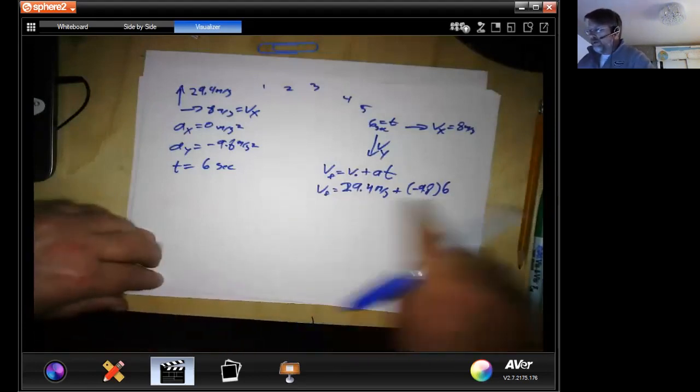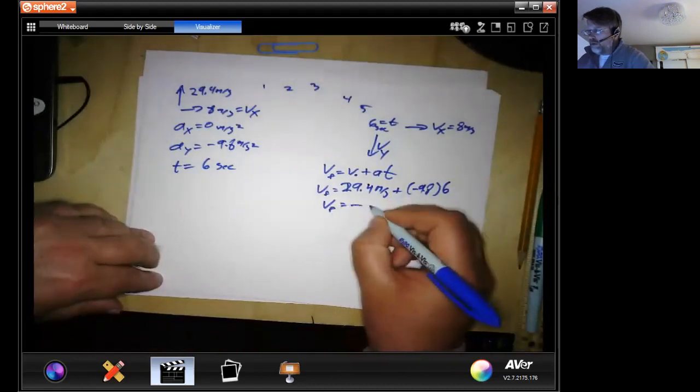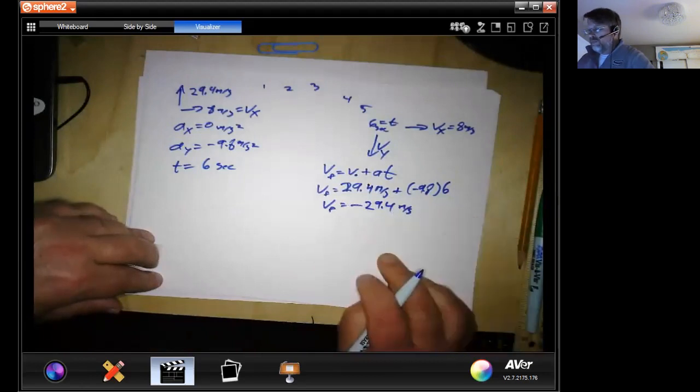But we don't have to have an eagle eye if we have the correct algebra here. Our V final should equal negative 29.4.